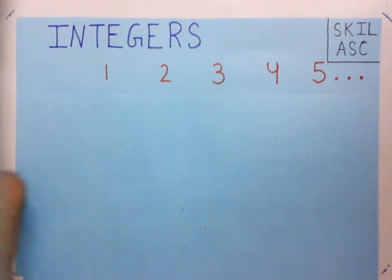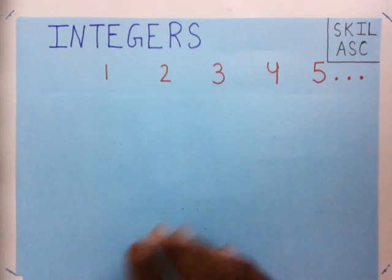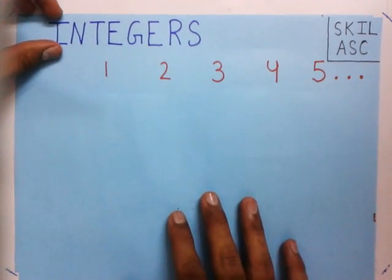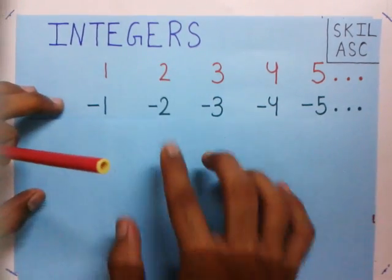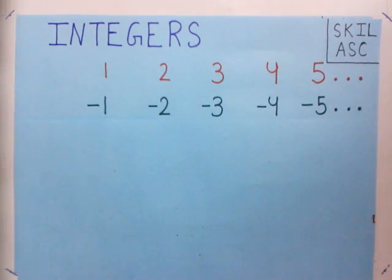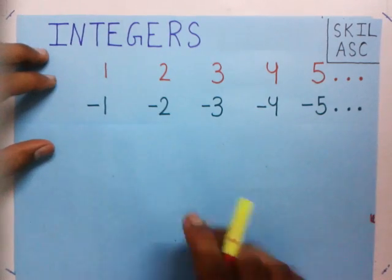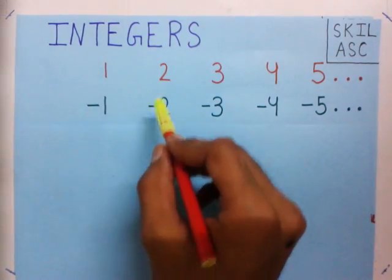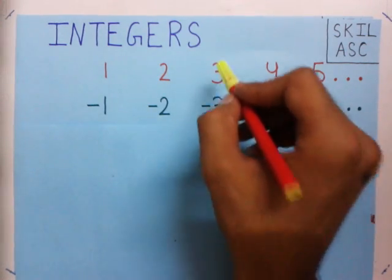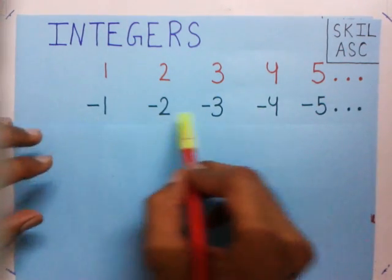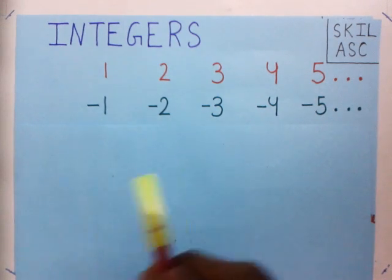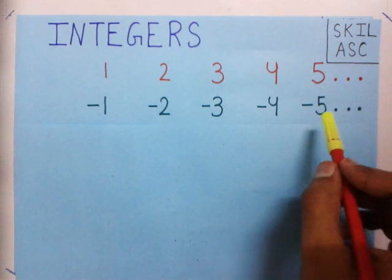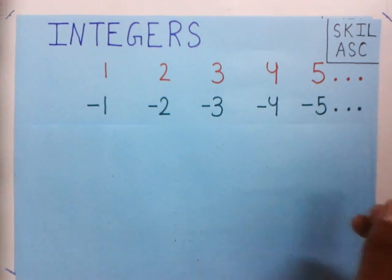Now what I will do next is I will put a negative sign to all these numbers and I will get a new list. You see I have put negative to 1, negative to 2, negative to 3, and I get a new list: minus 1, minus 2, minus 3, minus 4, minus 5, minus 6, minus 7 and so on.